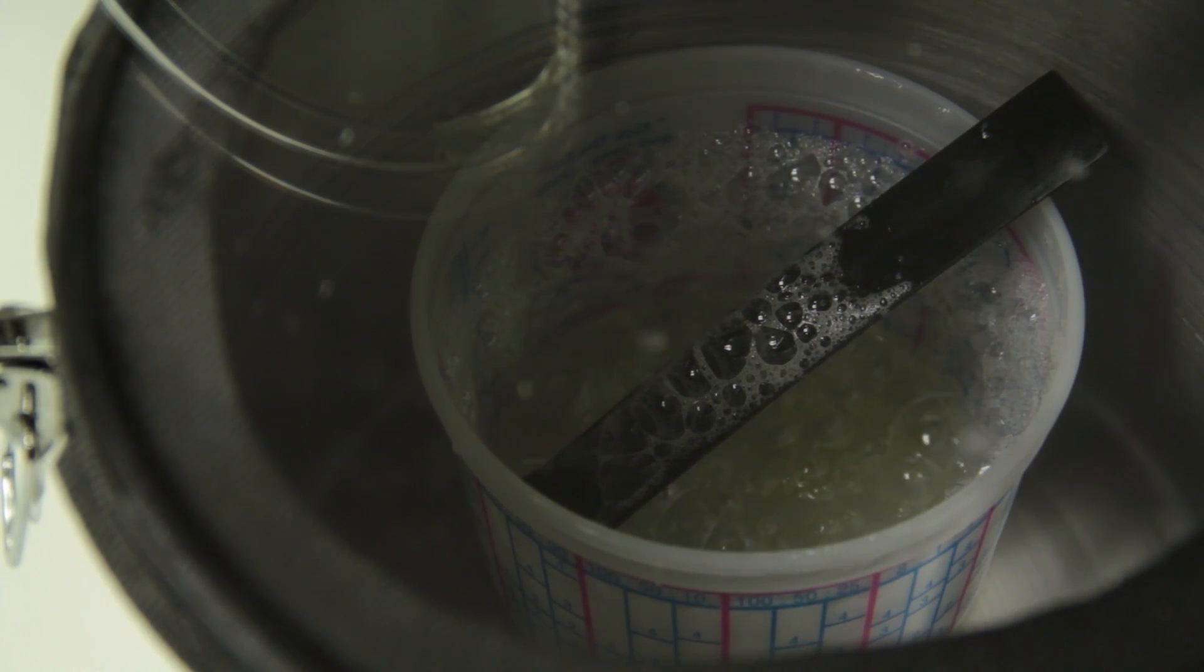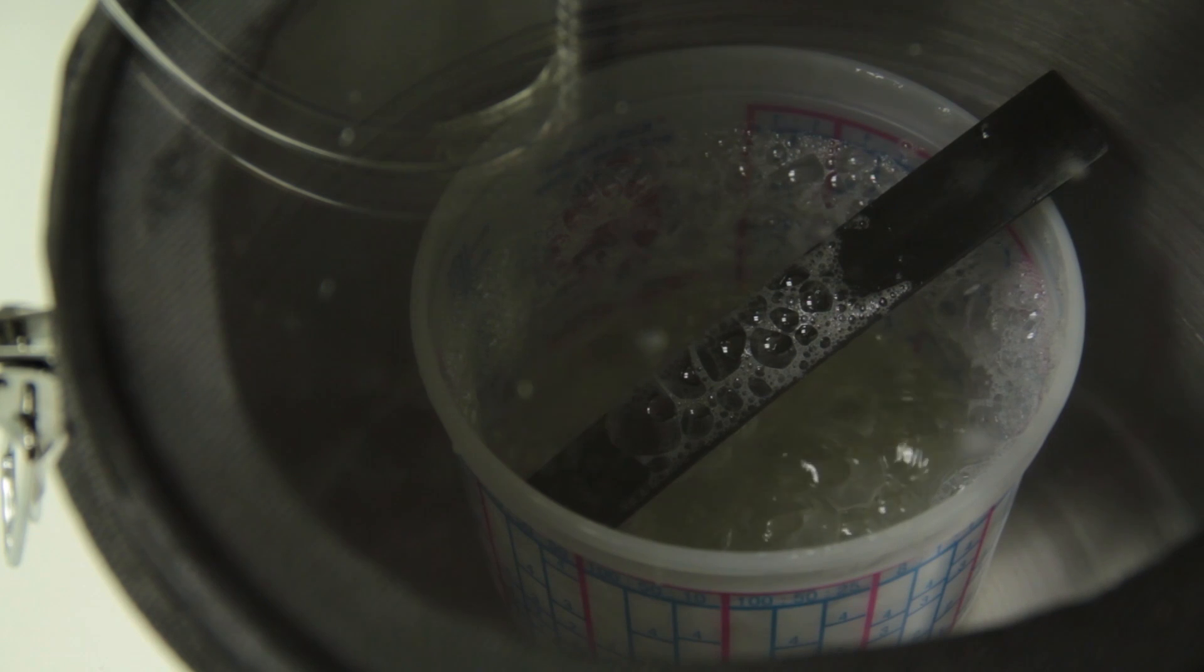Ideally when you're mixing epoxy you would like to do it in the largest, largest feasible container you can. The larger the diameter of the container the better. It helps you spread the epoxy out over a larger area and prevents some of that heating inside the pot that you would really like to avoid.